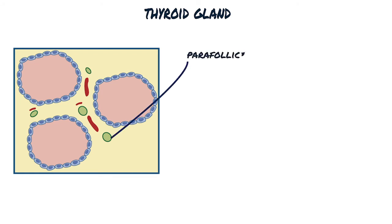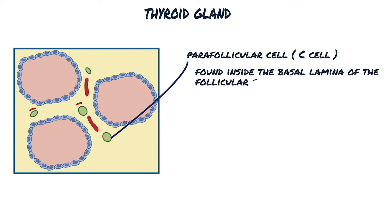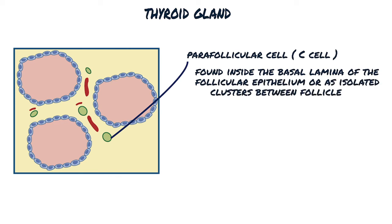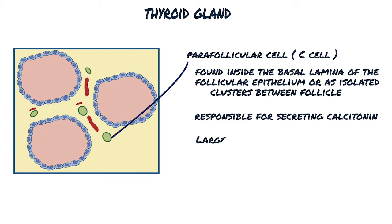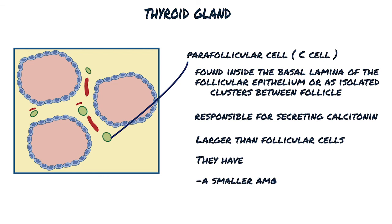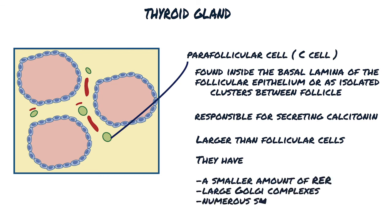Another endocrine cell type, the parafollicular cell or C-cell, is found inside the basal lamina of the follicular epithelium or as isolated clusters between follicles. They are responsible for secreting calcitonin. Parafollicular cells are usually somewhat larger than follicular cells, have a smaller amount of rough endoplasmic reticulum, large Golgi complexes, and numerous small granules containing calcitonin.